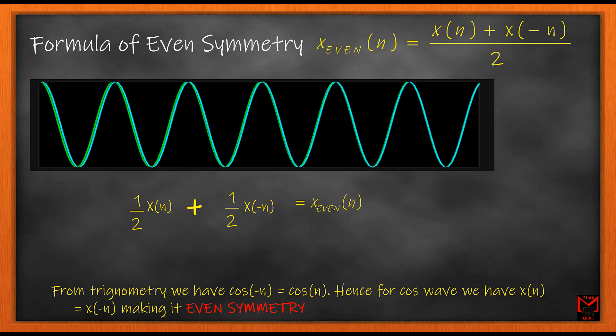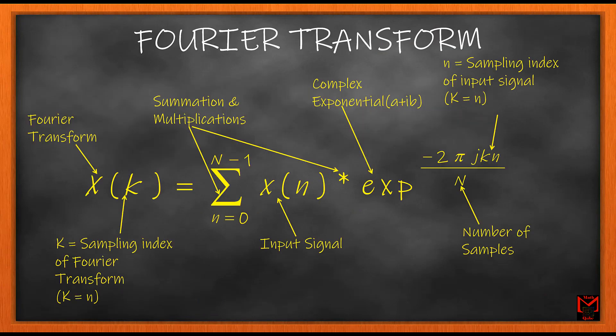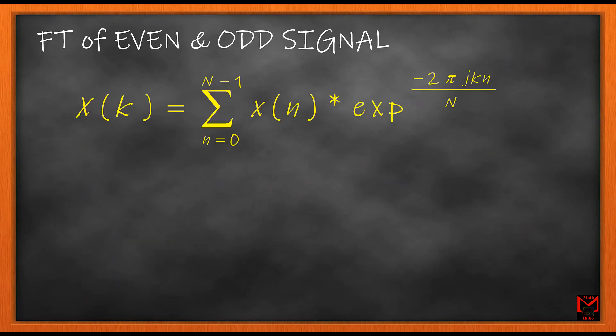Now let's see how the Fourier transform of a symmetric signal looks like. In case of symmetric signals, we need to use the Euler formula to expand the exponential part in the Fourier transform equation, as shown here.